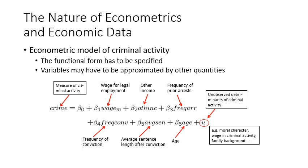Returning back to the crime model, we assume the functional form could be as follows. Assuming the relationship between crime — which measures criminal activities and represents the dependent variable Y — and the other six variables is linear, meaning all variables are raised to the power of one.